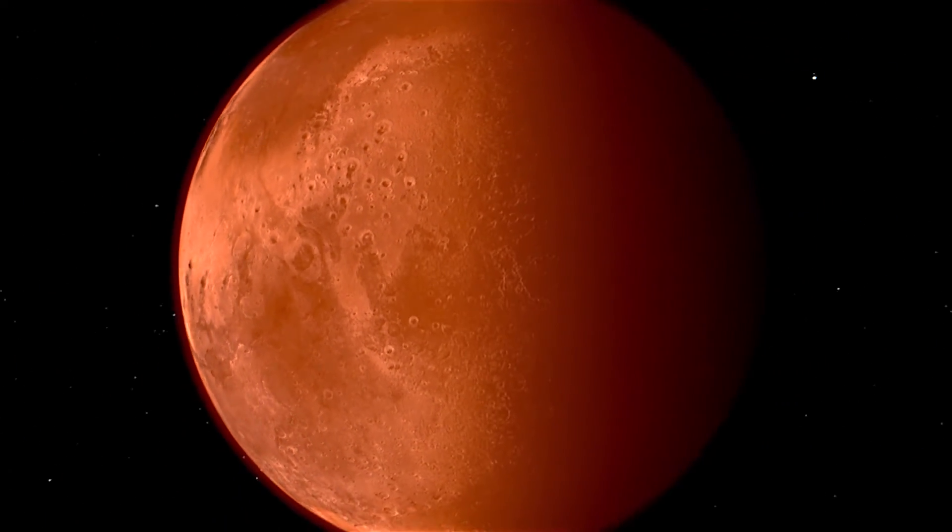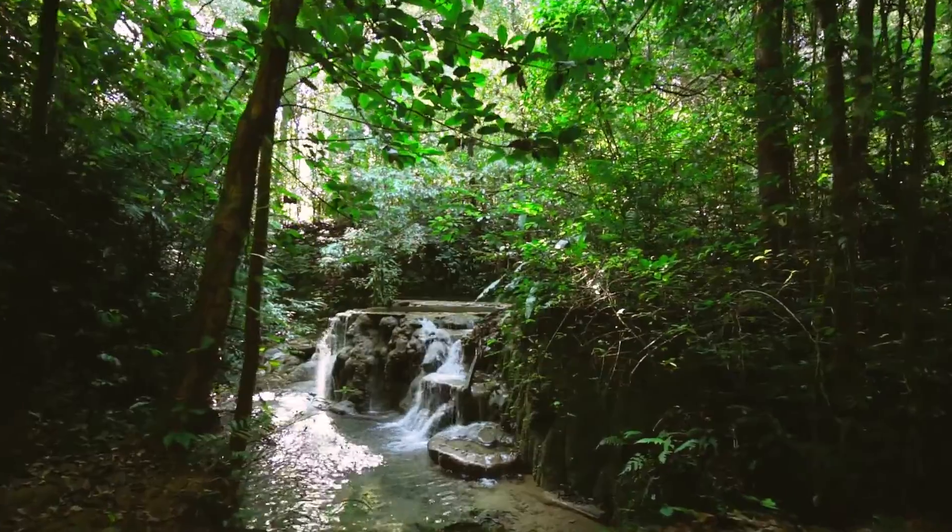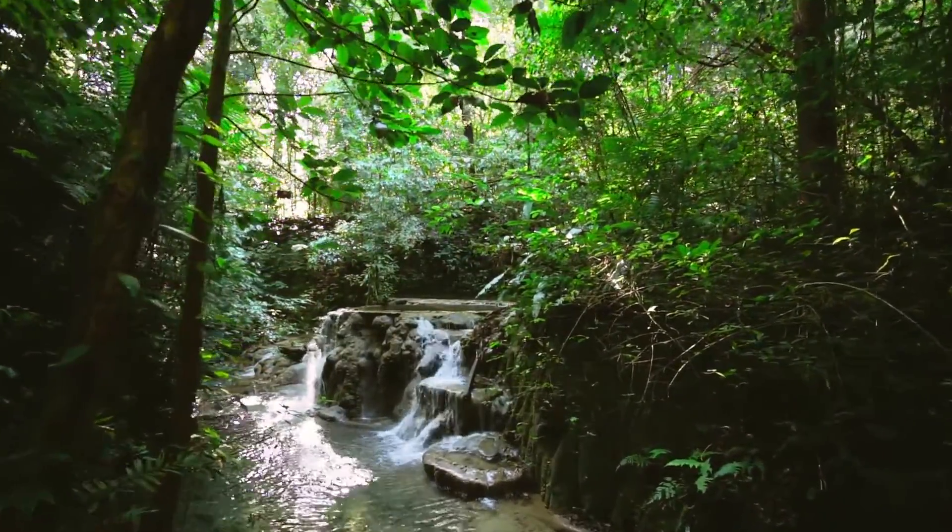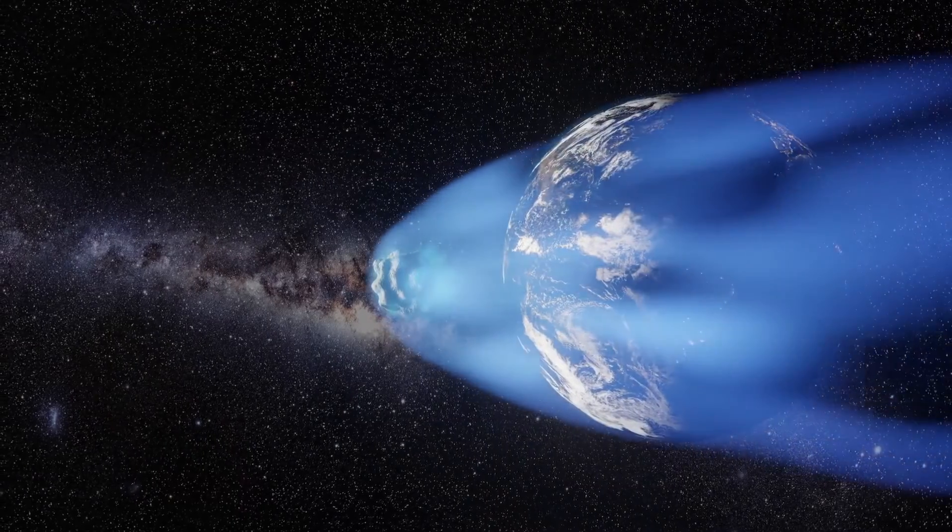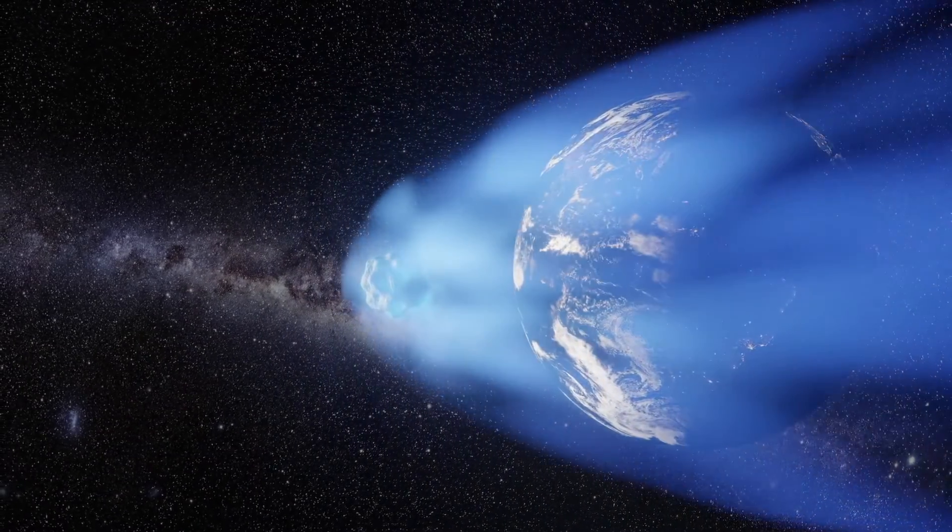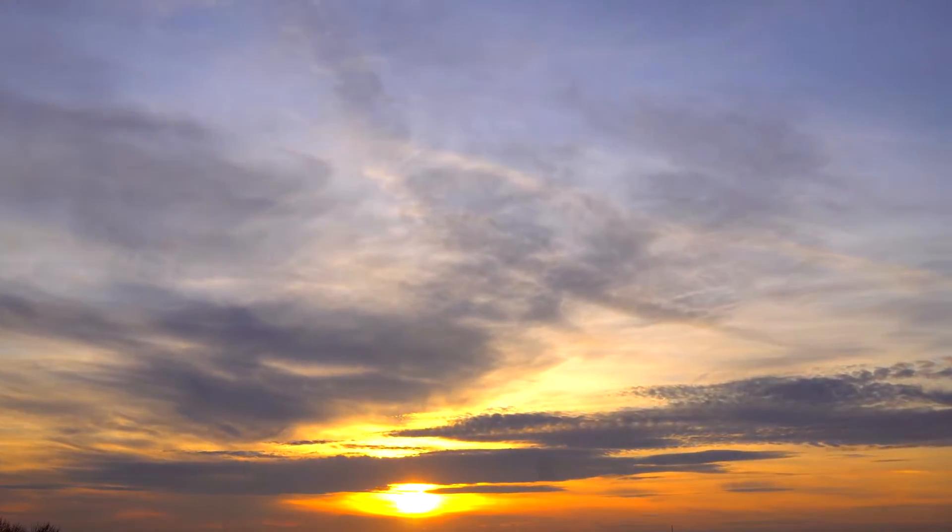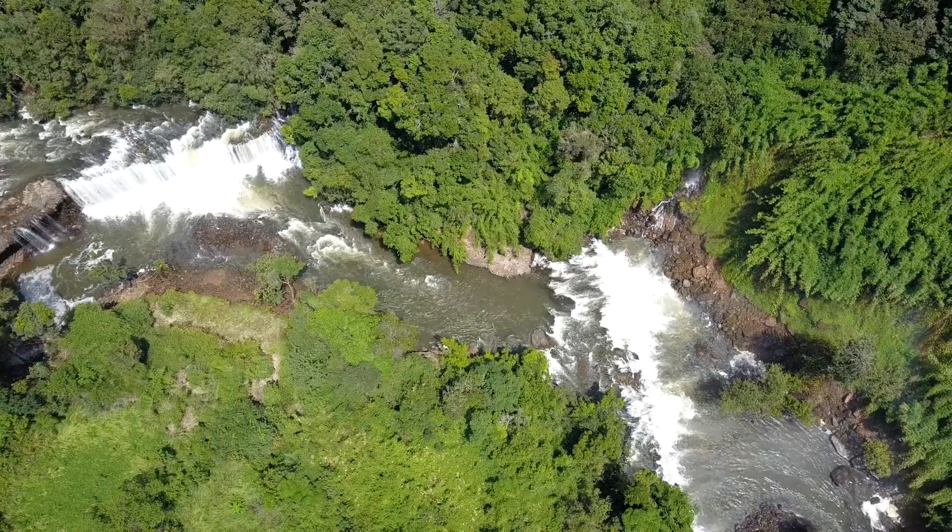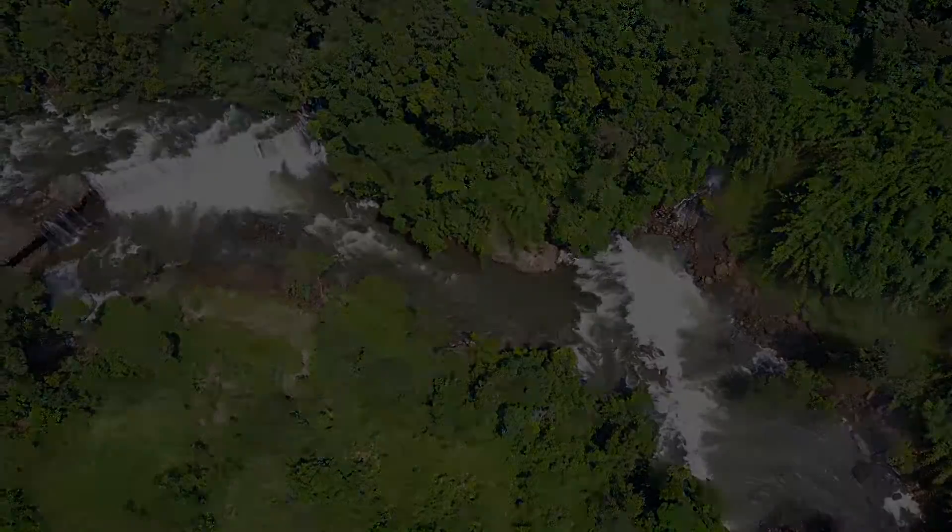For example, on Earth, oxygen, methane and nitrous oxide are products of life. If all life was suddenly wiped out, the Earth wouldn't hold those gases for more than a few months. The fact of them being in our atmosphere indicates an active manufacturing process, life, and this may be true elsewhere too.